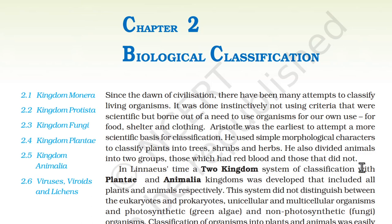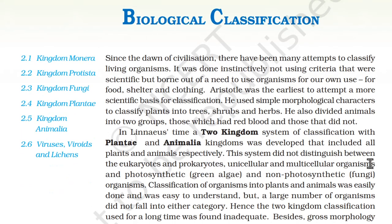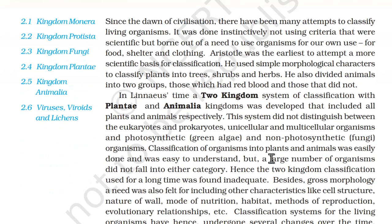In time, a two-kingdom system of classification with Plantae and Animalia was developed, including all plants and animals respectively. This system did not distinguish between eukaryotes and prokaryotes, unicellular and multicellular organisms, and photosynthetic green algae and non-photosynthetic fungi. Hence, the two-kingdom classification used for a long time was found inadequate.